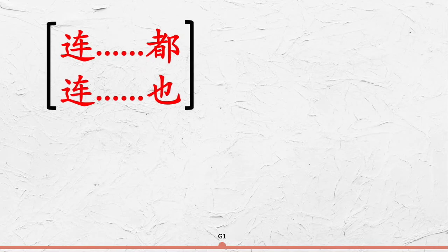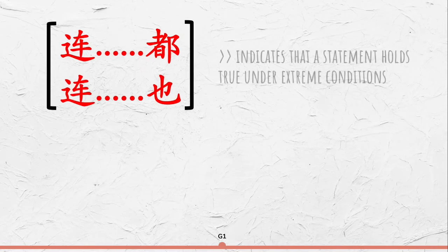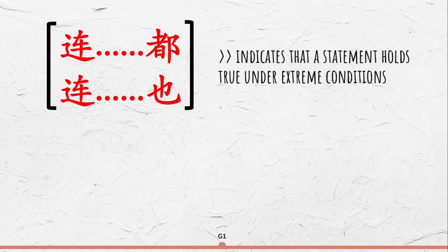连都 or 连也 is used to indicate that a statement holds true, especially under an extreme condition, such as a task being difficult even for an expert practitioner.